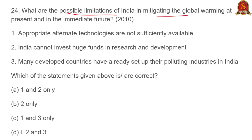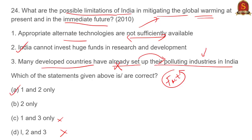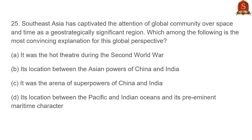Question twenty-four: limitations of India in mitigating global warming. Statement three says 'many developed countries have already set up polluting industries in India' — this is a fact but does not constitute a limitation on India's ability to mitigate global warming; India can still regulate those industries. Statement three is practically a joke answer. With C and D eliminated, concern yourself with statement one: 'appropriate alternate technologies are not sufficiently available' — this is true even today. The answer is A.